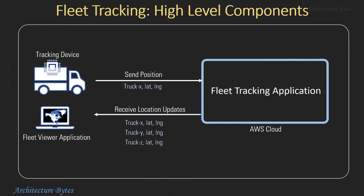Every truck has a tracker device that sends its identity and geographical position every few seconds to our backend application as a JSON message. The tracking device could be a dedicated IoT device or simply the mobile phone of the driver. The fleet viewer application receives location updates for your trucks in real time from the backend application. Here you can see the location and movement of your entire fleet on a map.